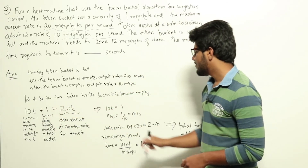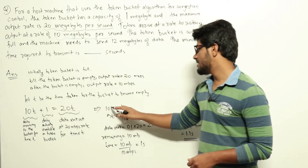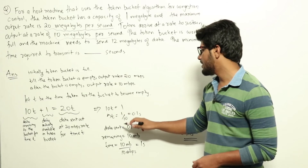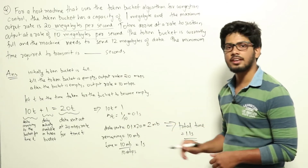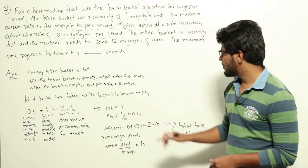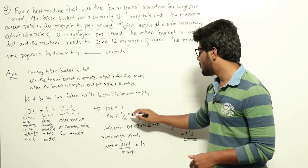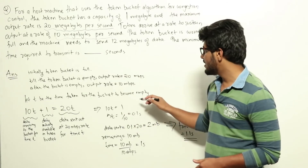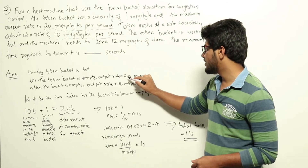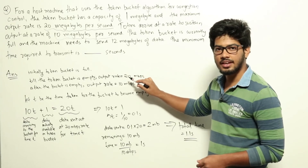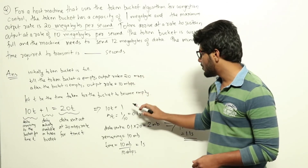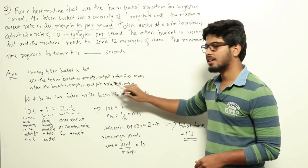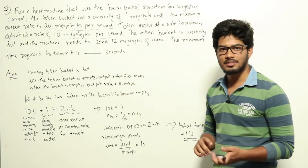From the equation 10t + 1 = 20t, we get 10t = 1, so t = 1/10 or 0.1 seconds. This means that for 0.1 seconds we'll be sending out at a rate of 20 megabytes per second, and after 0.1 seconds we'll be sending out at a rate of 10 megabytes per second.